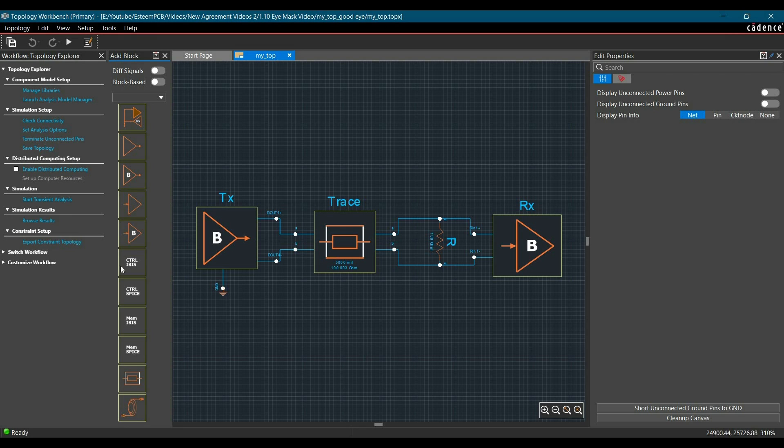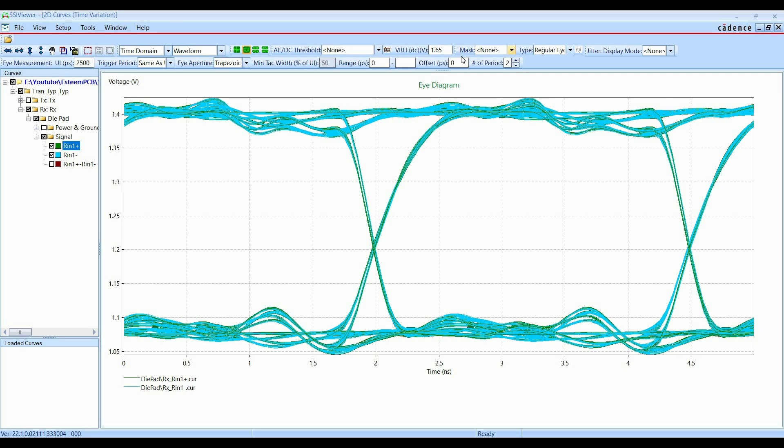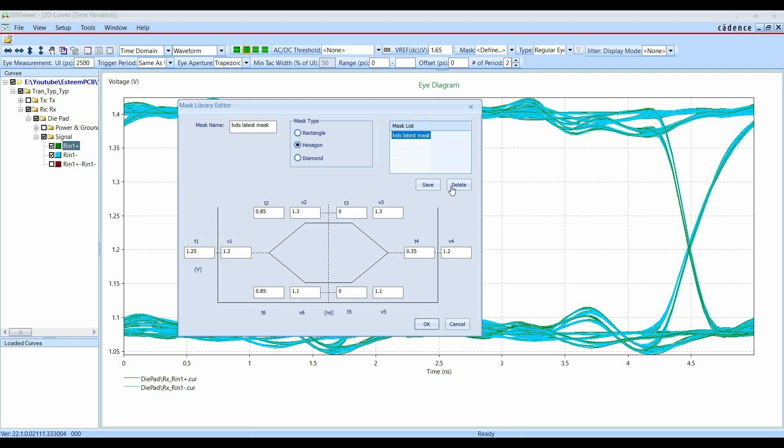So let's open Topology Explorer and run the transient analysis and plot for eye diagram. Once the eye diagram is there, now we have to define the eye mask. To do that you have to click over mask and click on define button. Let's delete this previous one and we are going to create a new mask. Let's name it LVDS synchronized channel and this will be a hexagonal mask. Similarly, you can plot for rectangular and diamond. Now for hexagonal mask, we have to put all these values that we have created in previous step. So this will be point B, point C and point D, point E and point F and point G. So we have to add all these values with respect to this center. Alright. So let's put those values quickly.